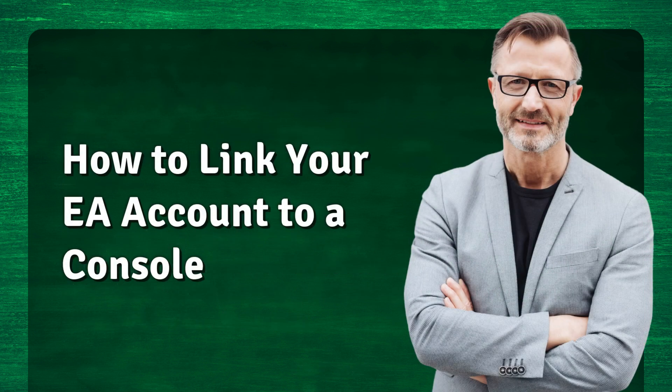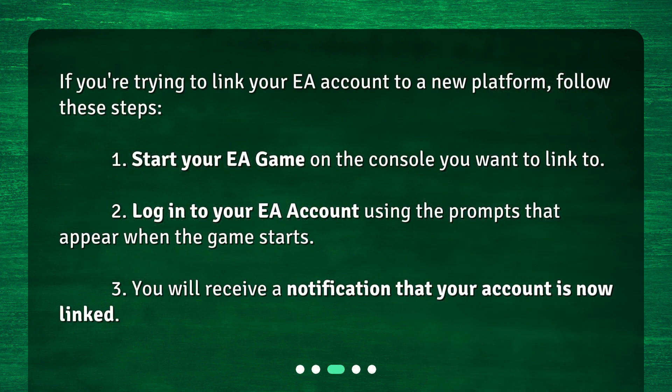How to link your EA account to a console: If you're trying to link your EA account to a new platform, follow these steps. 1. Start your EA game on the console you want to link to. 2. Log in to your EA account using the prompts that appear when the game starts. 3. You will receive a notification that your account is now linked.